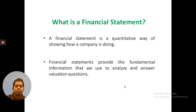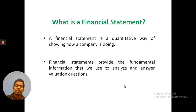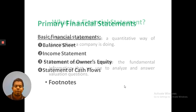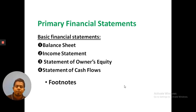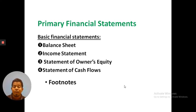The financial statement is basically a quantitative way to understand the business. Financial statements are compiled of: the balance sheet, the income statement, the statement of owner's equity, the statement of cash flows, and footnotes. If you look at the annual report of any company, you will see these financial statements along with footnotes.